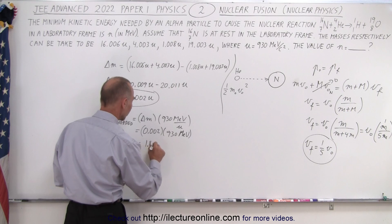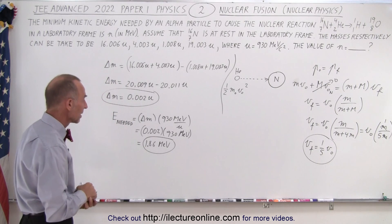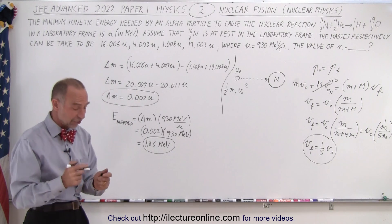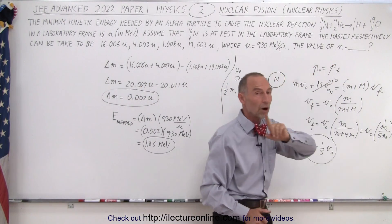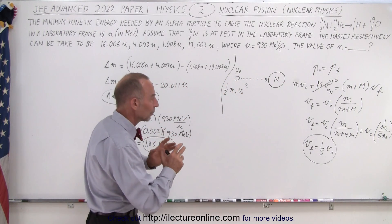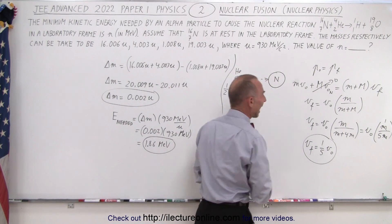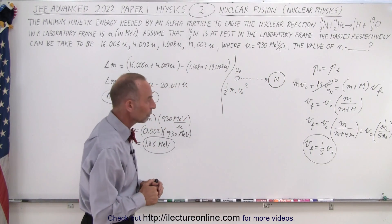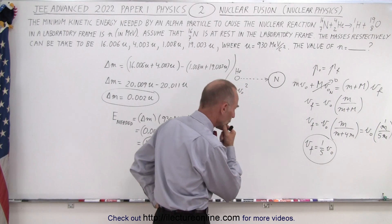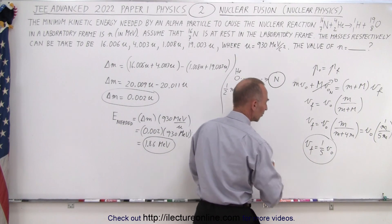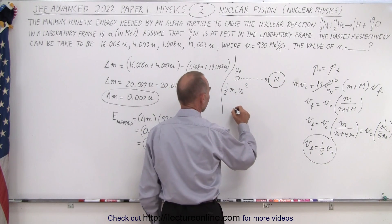So the energy needed is 0.002 times 930 MeV, which equals 1.86 MeV. This is the amount of energy needed to make the reaction occur. But be careful — you might think 1.86 is the final answer, but that would be wrong, because you need additional kinetic energy since some goes into moving both objects together after the collision. Only four-fifths of the available kinetic energy can be used.